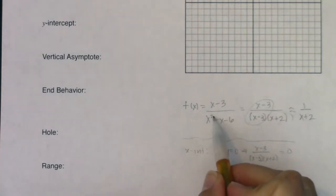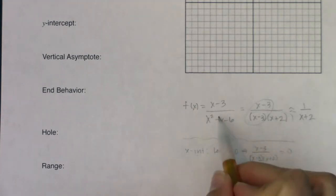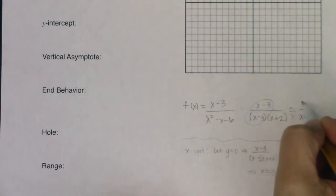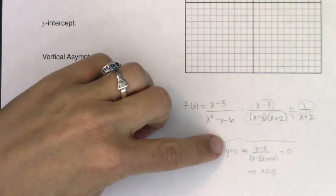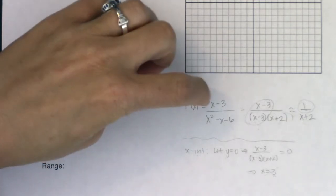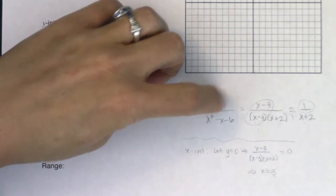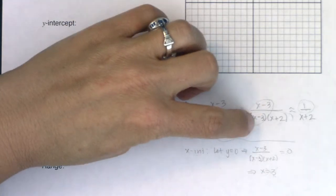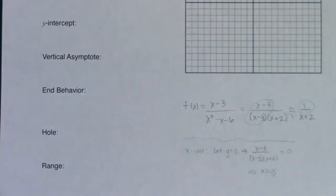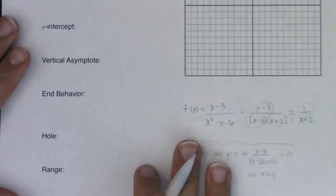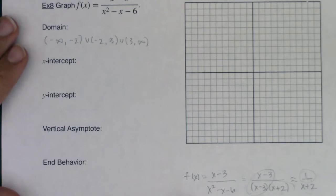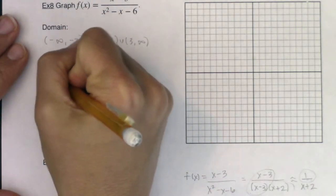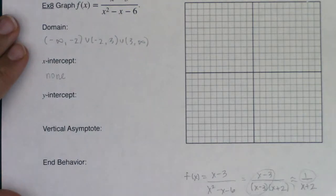My original function behaves just like 1 over (x plus 2) except there's a hole. Take a look at 1 over (x plus 2) — when does that numerator ever equal zero? It doesn't. There is no value of x I can plug into my original function that will zero out just the numerator, because as soon as I zero out my numerator with x equaling 3, it automatically zeroes out my denominator too. So ultimately, I don't have any x-intercepts — this rational function is not going to cross the x-axis.